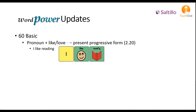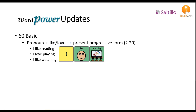In update 2.20, 60 Basic includes a combination of a pronoun plus like or love and opening present progressive forms of the verb. For example: I like reading. I love playing. I like watching.